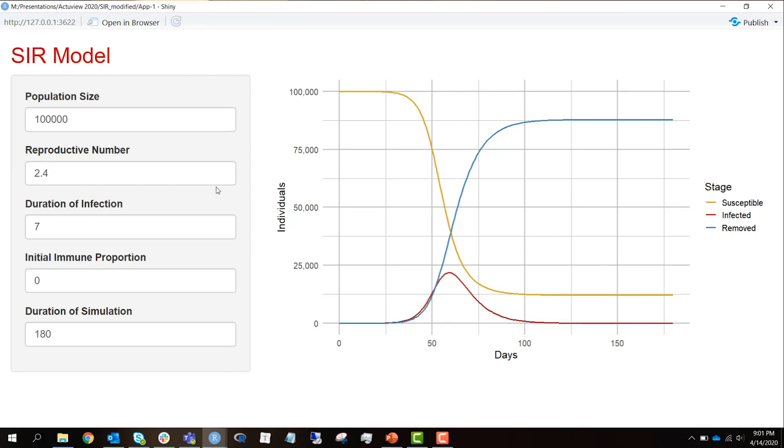Now, what happens if we drop this reproductive number? If we have a disease that doesn't reproduce quite as quickly, remember, the reproductive number is the number of individuals that patient zero is going to infect. If we have a smaller reproductive number, watch how that red infected curve flattens out.